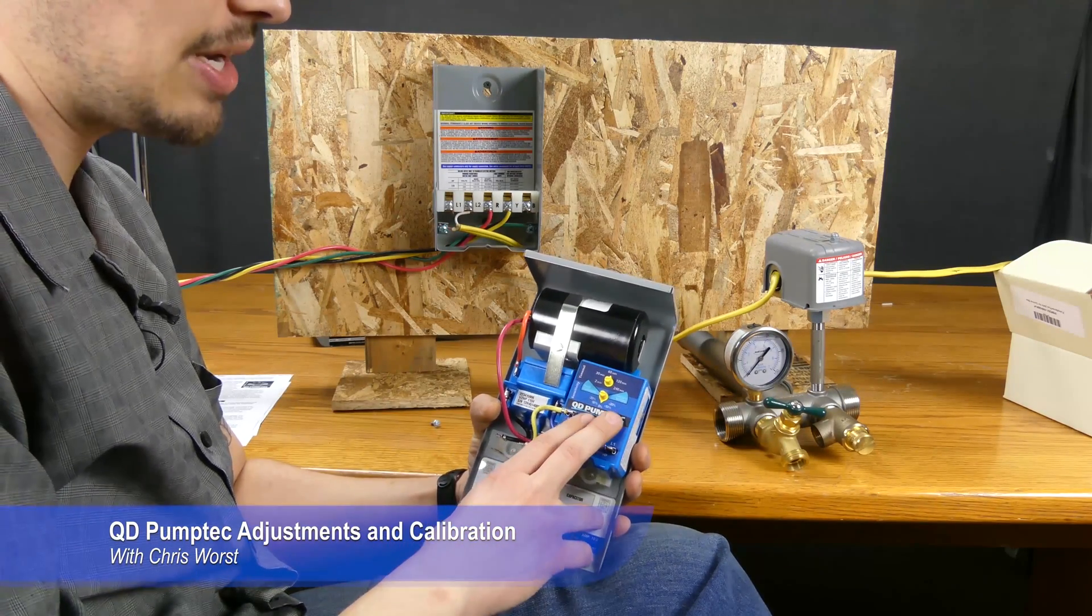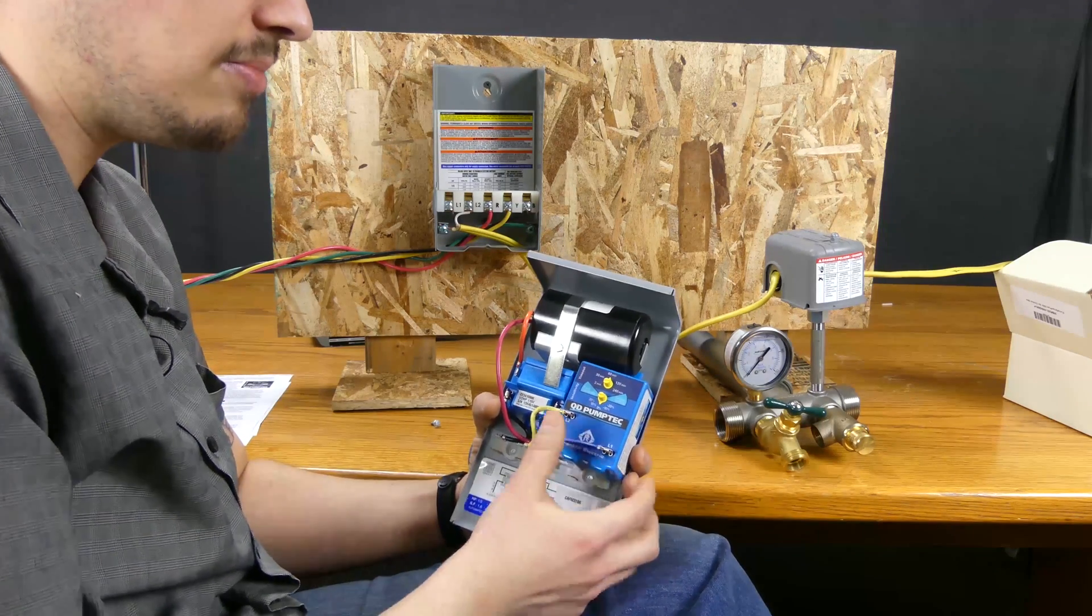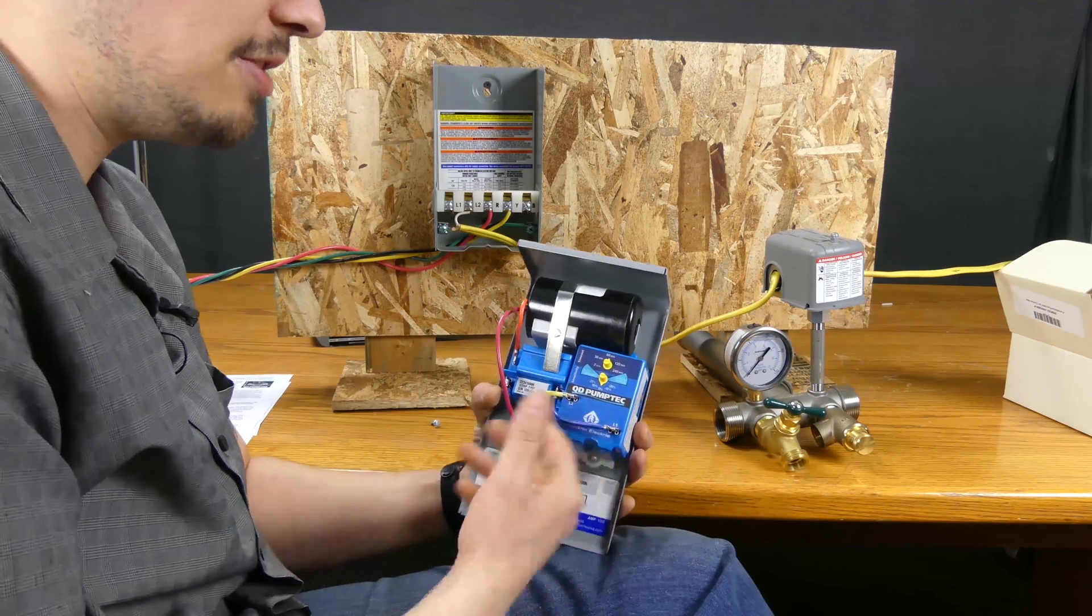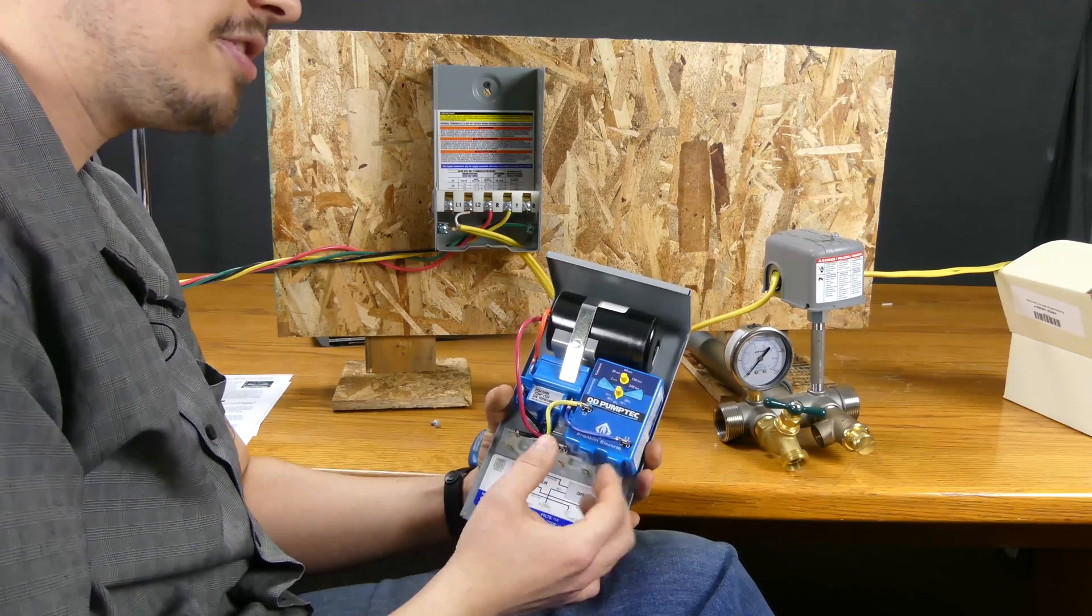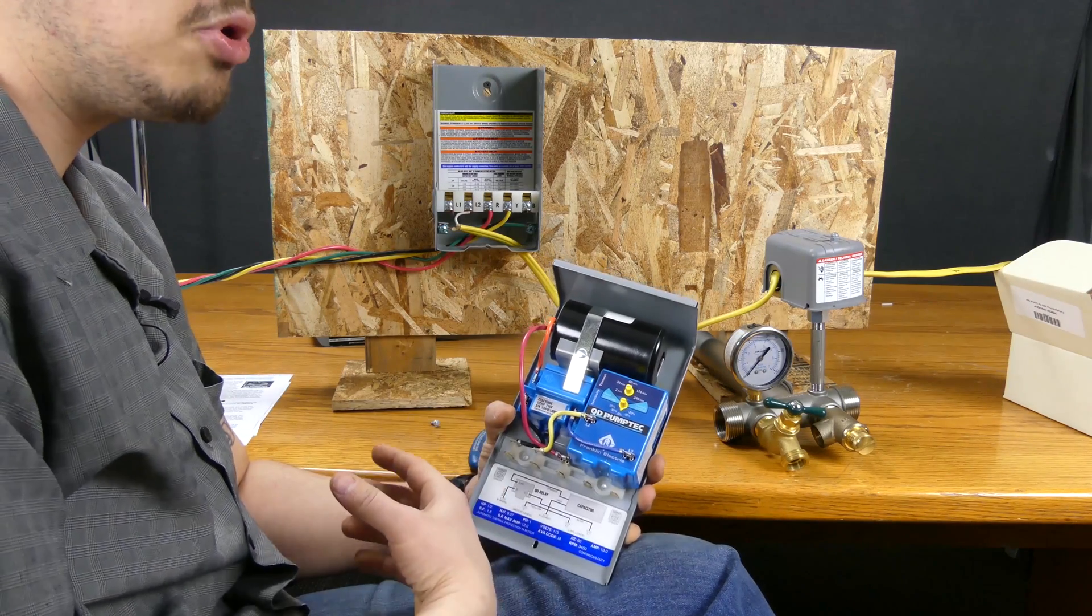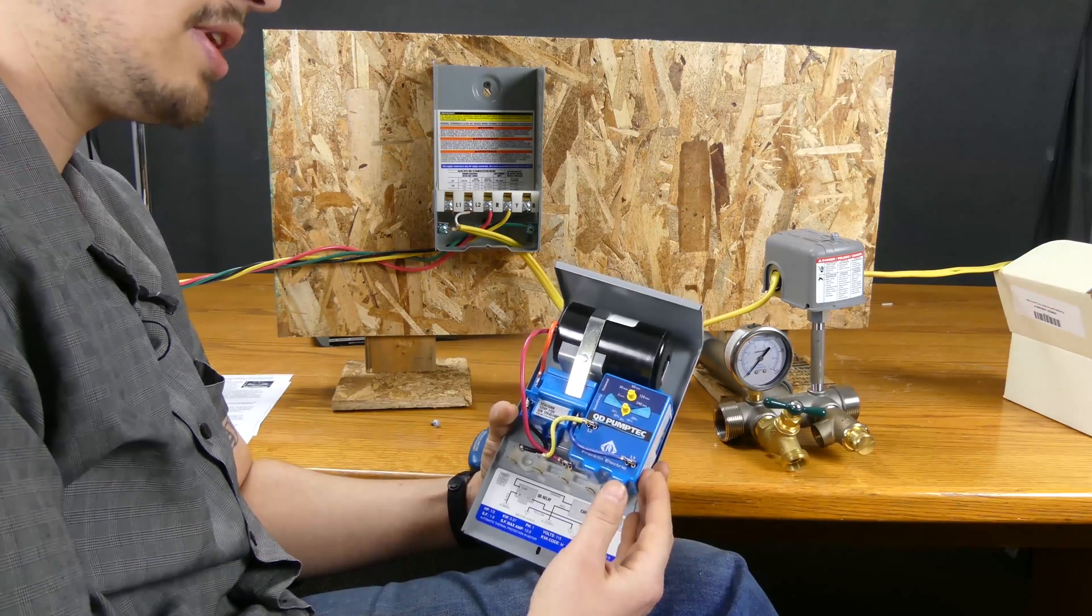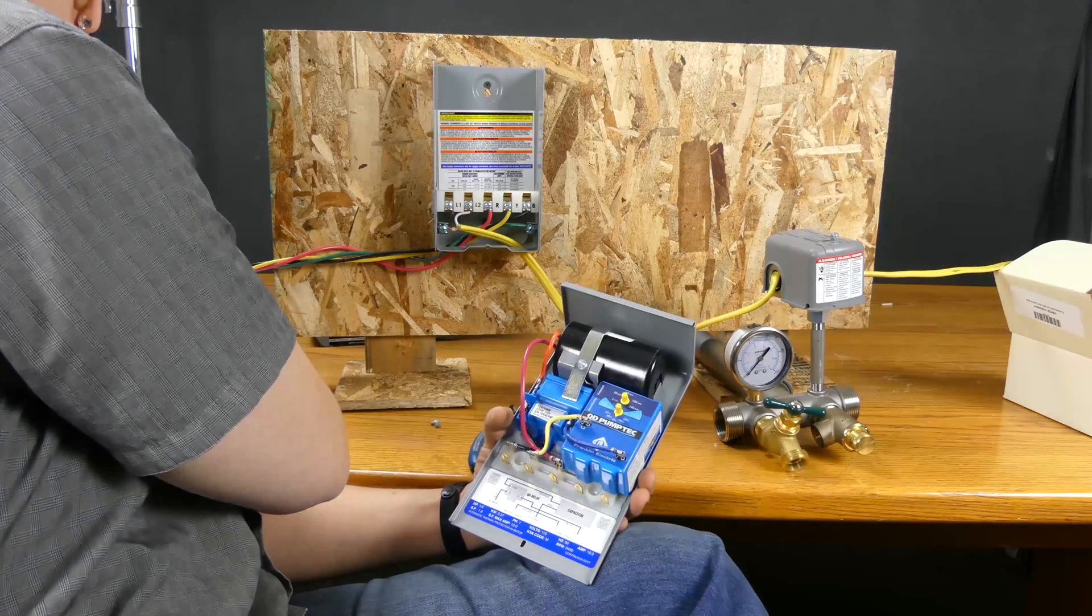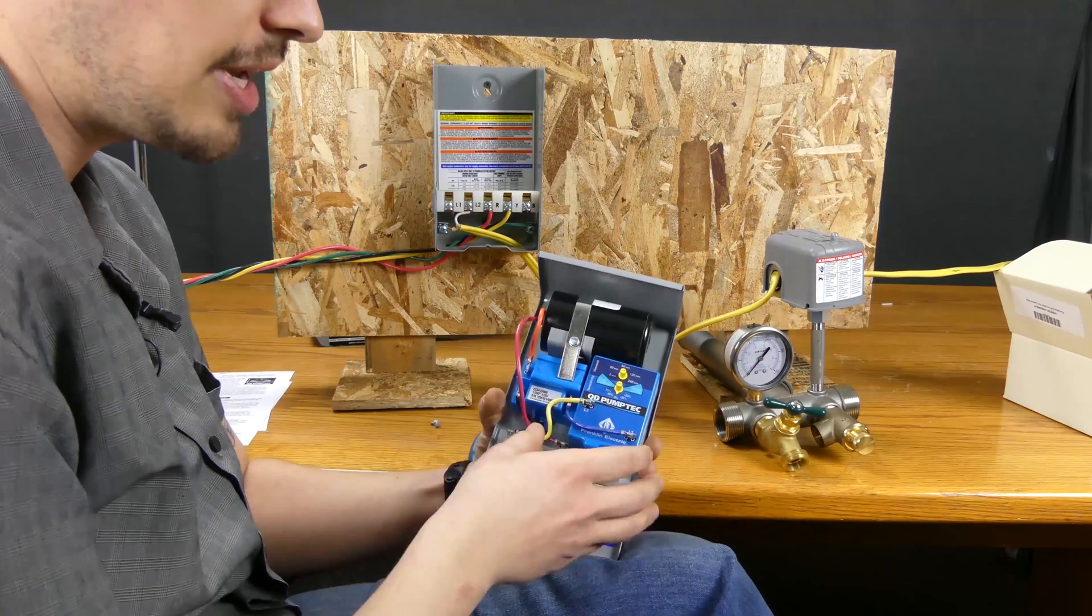Now the first thing I want to preface this with is when it comes to these QD pump techs, generally probably 70 to 80 percent of the time the factory settings are going to be fine and there's going to be no adjustment needed. But if you find that you need to adjust yours you certainly can, and you're going to find most commonly you're going to need to adjust these if you're using it with a motor that's not a Franklin electric motor. But basically if it's a Franklin electric motor one-third through one horsepower, I believe through one and a half horsepower, this should be set up and shouldn't take any adjustment.